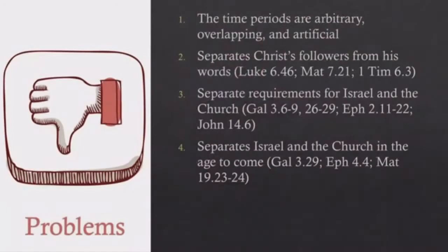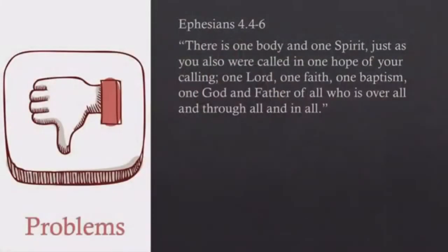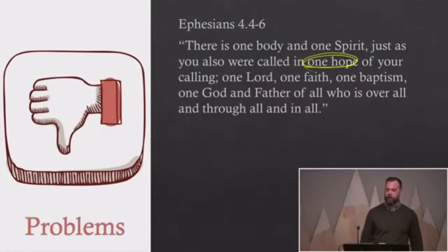Number four: dispensationalism separates Israel and the church in the age to come. The idea in classic dispensationalism is that Israelites would inherit the land — ethnic, national, territorial Israel and the earth — while if you're part of the church, you go to heaven. So you had two hopes. But that's a problem for Ephesians 4:4-6, which says: 'There is one body, one spirit, just as you were called in one hope of your calling — one Lord, one faith, one baptism, one God and Father who is over all.' We have one hope, not two.